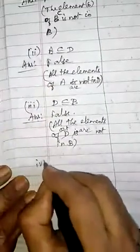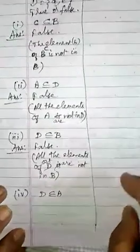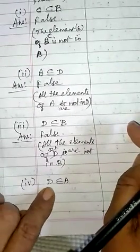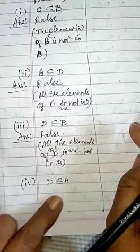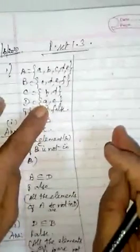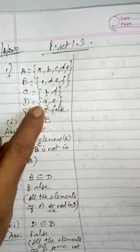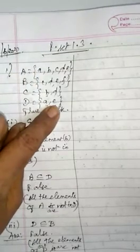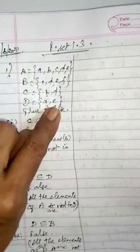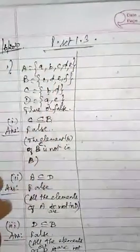We will do the fourth one. What is the fourth one? D is a subset of A. So which is the smaller set? D. And the bigger set is A. So what is the first element in D? A. Is element A in set A? Yes, it is there. Then what is the next element? E. Is E in A? Yes, it is there. We don't need to bother about the other elements.